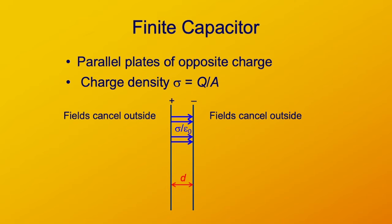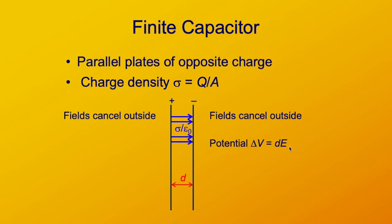The plate separation is lowercase d. The potential difference between the plates is the work per unit charge to push a charge from one plate to the next. If we're going to push a charge from the minus plate to the positive plate, we're pushing it against a force of the electric field E times the charge Q. We have to push it a distance d, so the work done is dEq. The potential is just that work per unit charge, so that's just dE.